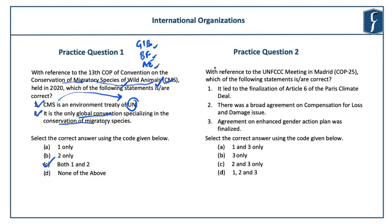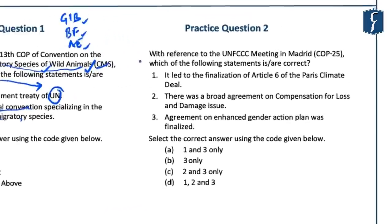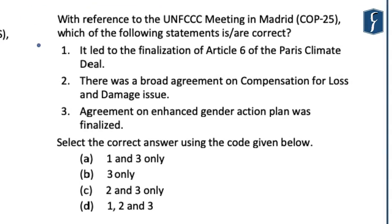The next question is about the 25th Annual Talks under UNFCCC, referred to as Conference of Parties 25, held in Madrid in December 2019. It was the longest Conference of Parties ever. Since these Conference of Parties are held every two years, they become important from the perspective of both Prelims and Mains examinations. The question reads: with reference to UNFCCC meeting in Madrid, Conference of Parties 25, which of the following statements are correct? Statement 1: it led to the finalization of Article 6 of the Paris Climate Deal. Statement 2: there was a broad agreement on the compensation for loss and damage issue. Statement 3: agreement on enhanced gender action plan was finalized.